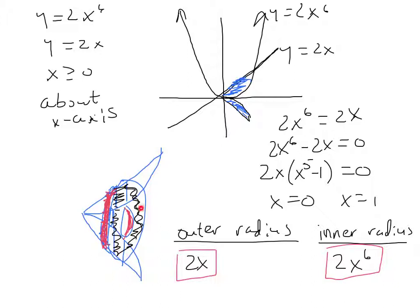The outer radius, if we were to rotate this thing about the x-axis, would be 2x because that's the linear function, and an inner radius of 2x to the sixth. When we rotated this thing, we'd wind up with a solid that if we broke it up into infinitely small pieces vertically with thickness dx, we would wind up with a washer-looking object.